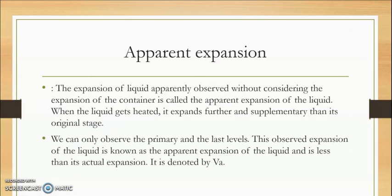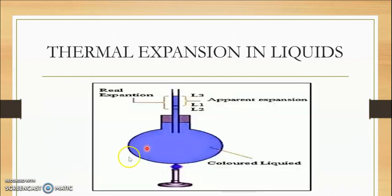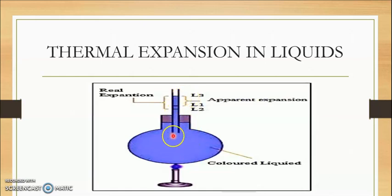The apparent expansion is calculated without considering the expansion of the container — we ignore the container expansion here. Looking at the diagram, the apparent expansion uses the original volume at L1 as the starting reference, without accounting for the intermediate drop to L2.